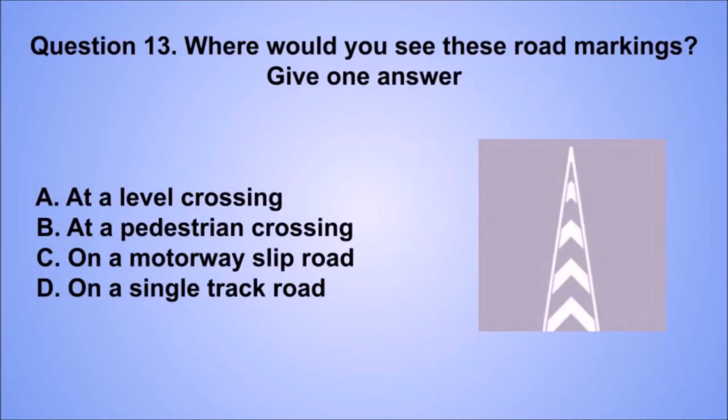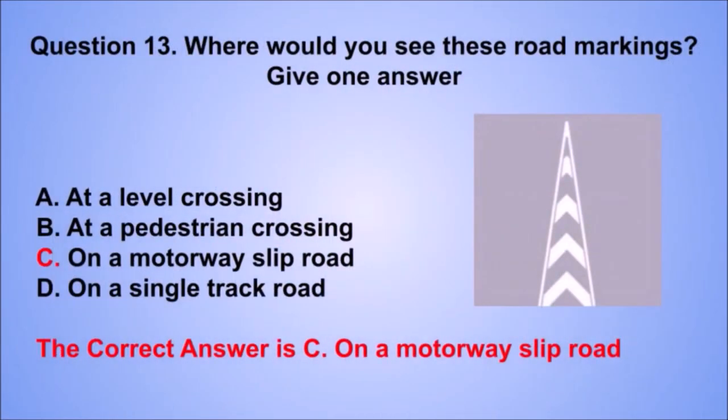Question 13. Where would you see these road markings? The correct answer is C: On a motorway slip road.